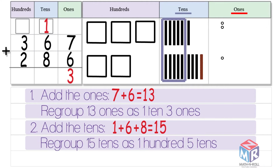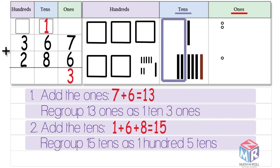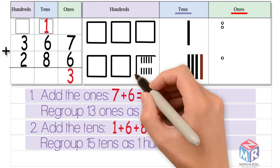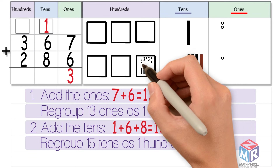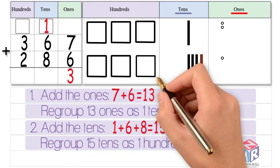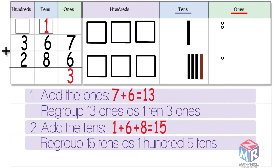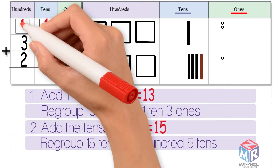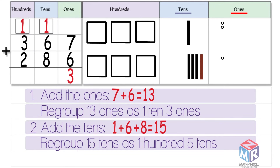We transfer ten tens into the hundreds place to create one hundred, represented as a square. We write this extra hundred at the top of the hundreds column. Now we're left with five tens.